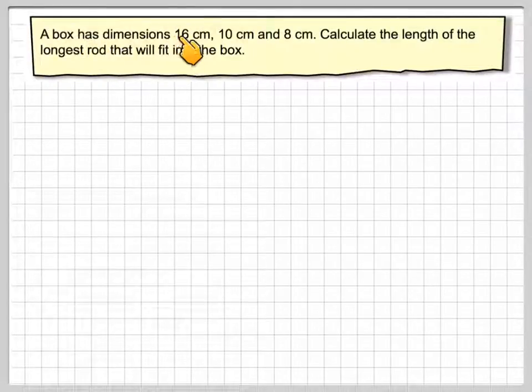A box has dimensions 16 cm, 10 cm and 8 cm. Calculate the length of the longest rod that will fit into the box.